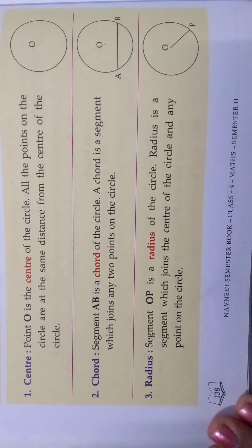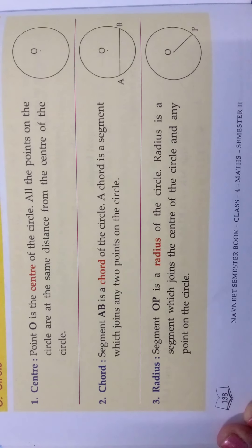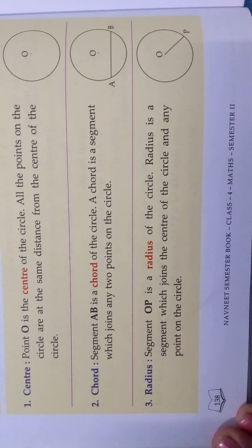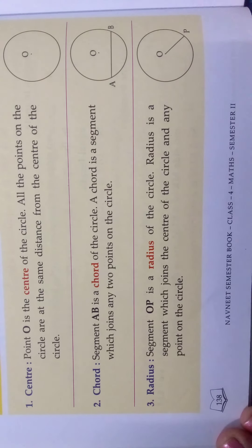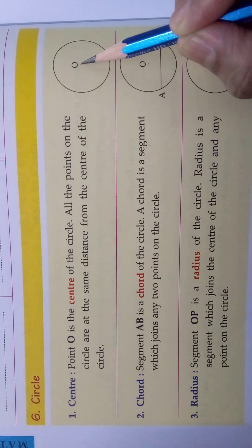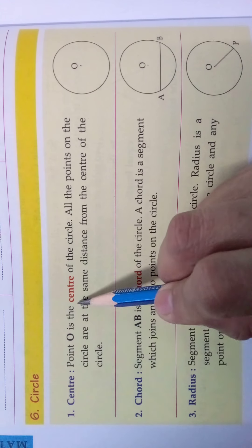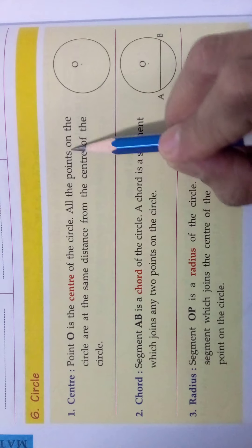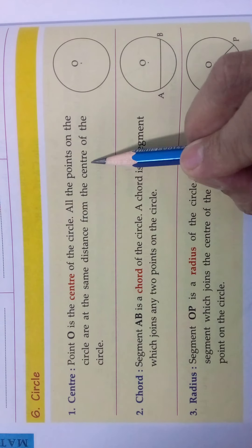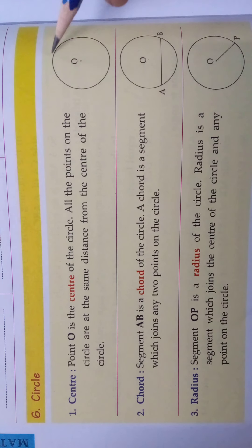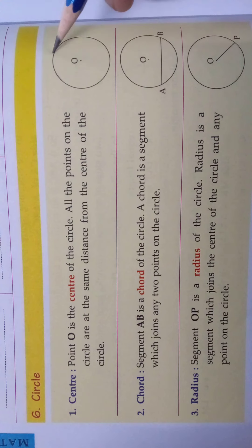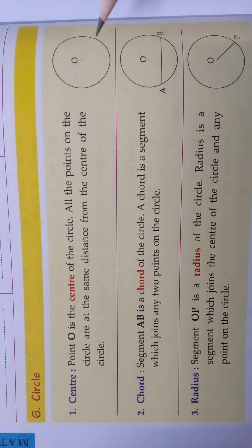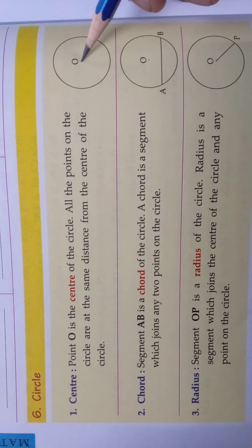Hi children, come we will see the next topic: circle. Take your textbook, turn to page number 138. Now we are going to learn about circle. See, this is a circle. The point which is at the centre is called the centre. Point O is the centre of the circle. All the points on the circle are at the same distance from the centre.